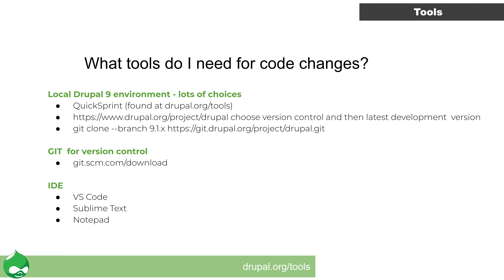If you have those, feel free to keep using your current setup — what we are showing here is one way to do things, but it is not the only way. For a quick setup, if you do not have local hosting already configured, you can try out the quick sprint tool found at drupal.org/tools. You can also go to drupal.org/project/drupal to choose the latest development version and get the Git clone command — currently that version is 9.1.x. You will need Git installed; in some operating systems it will be pre-installed and you can check by typing git at the command line. You will also need a text editor — it can be as simple as Notepad, but we would recommend an IDE such as VS Code, which is free and has lots of useful features such as code highlighting.